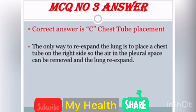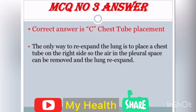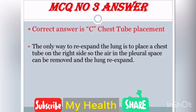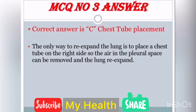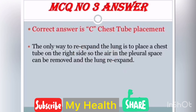The correct answer for MCQ number 3 is C — chest tube placement. The only way to re-expand the lung is to place a chest tube so that air in the pleural space can be removed and the lung can re-expand.